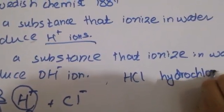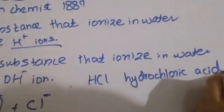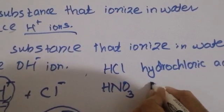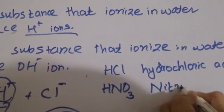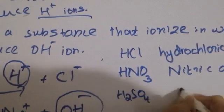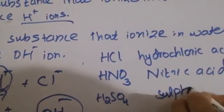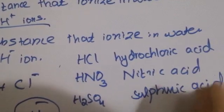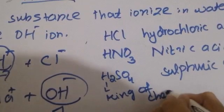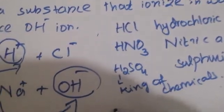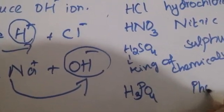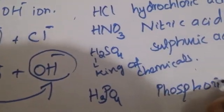Next important acid is HNO₃, called Nitric Acid. Next is H₂SO₄, called Sulphuric Acid — H₂SO₄ is known as the King of Chemicals. Next is H₃PO₄, called Phosphoric Acid. These four are very important acids and you need to know their chemical formulas and names.